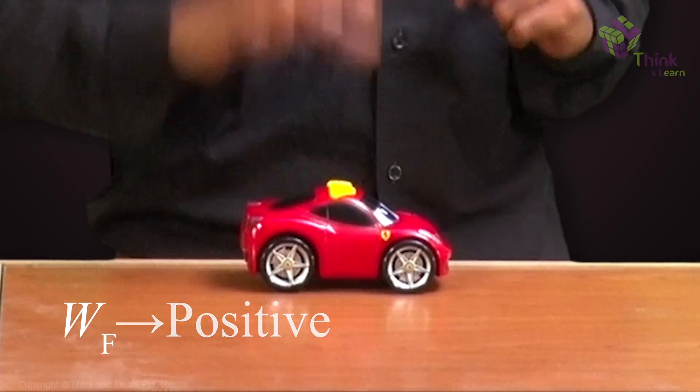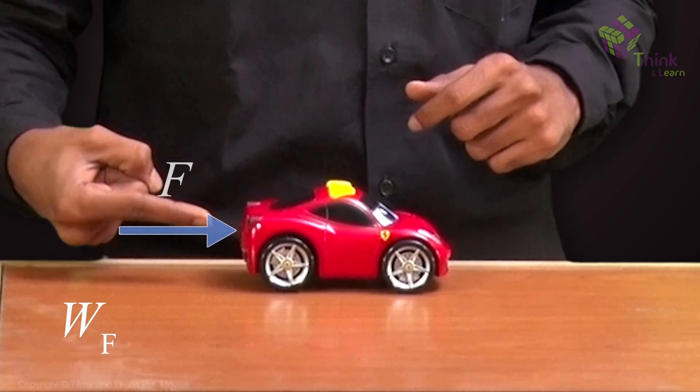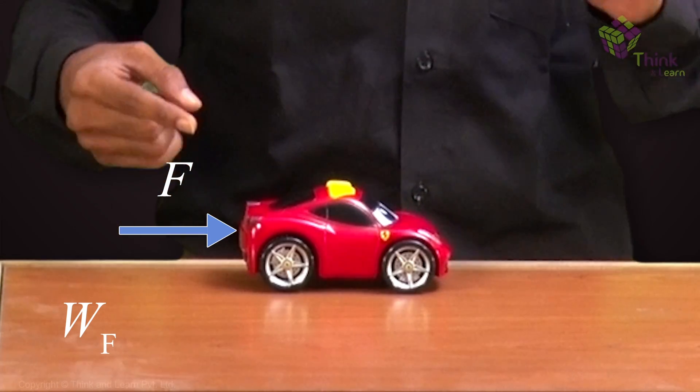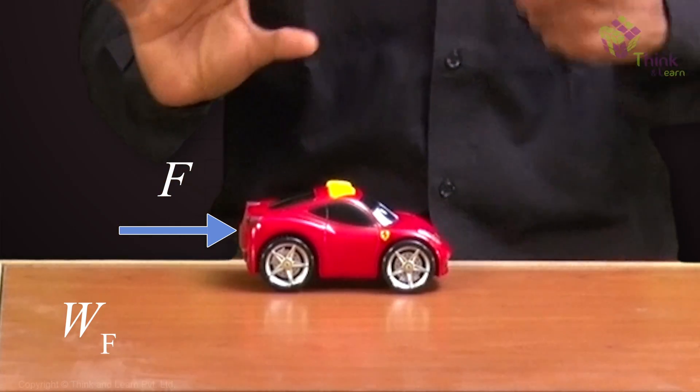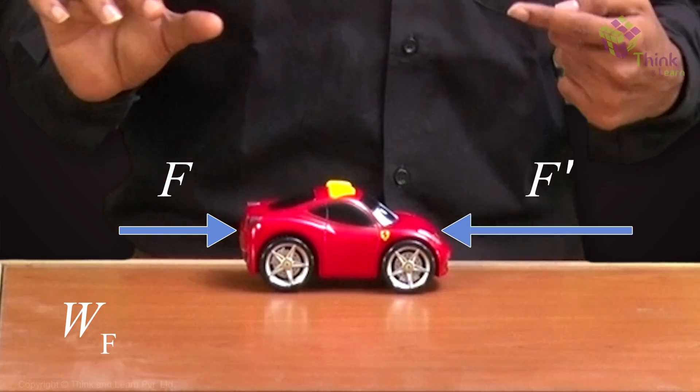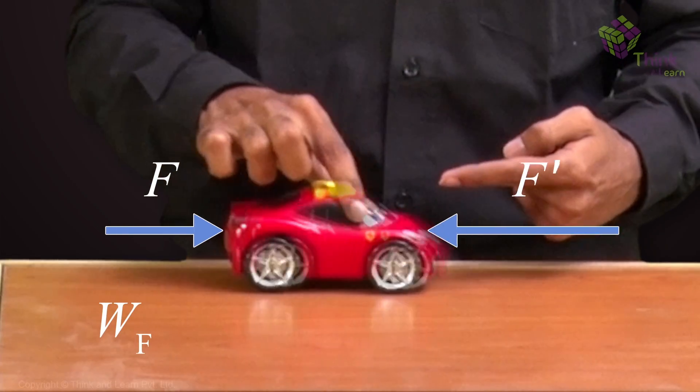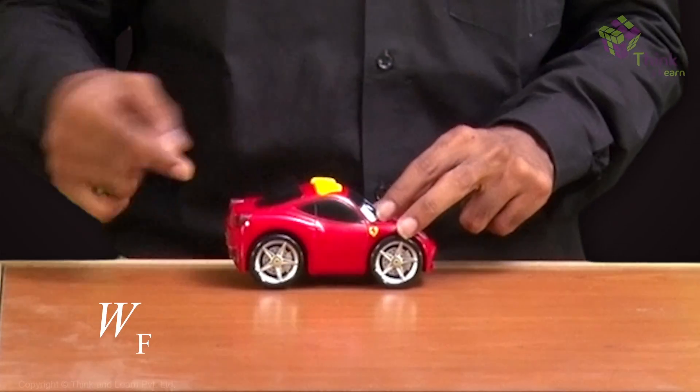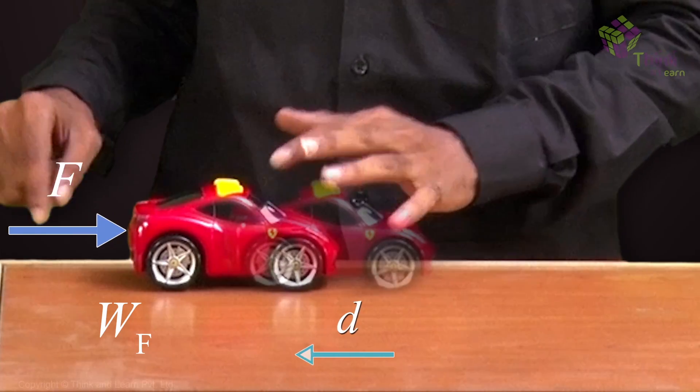But now let us say that I bring it back over here and now I am applying the same force, the same force F. But there is some force probably in the other direction which is stronger, which is the only way that the body will end up going the other way. So let us say that I am applying a force like this, but the body is going that way.